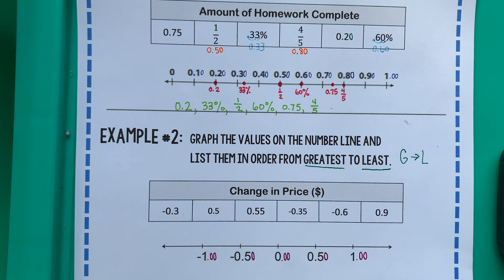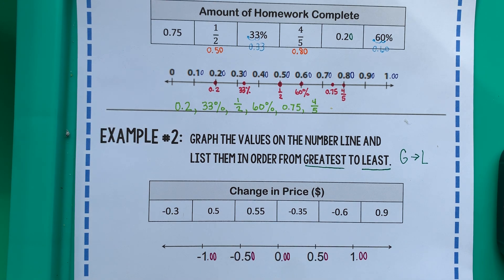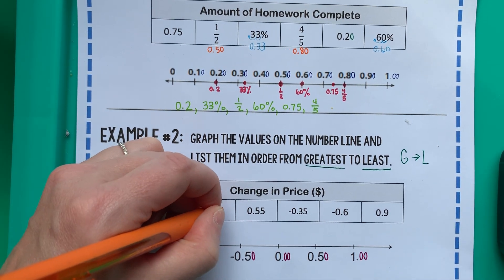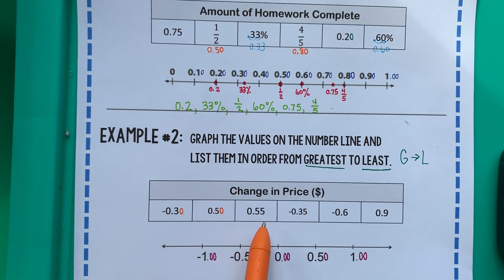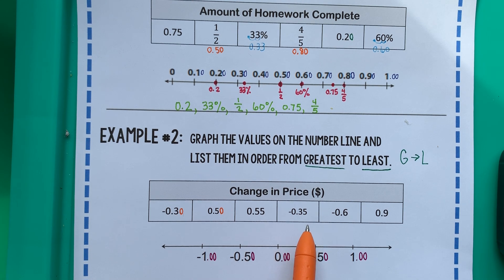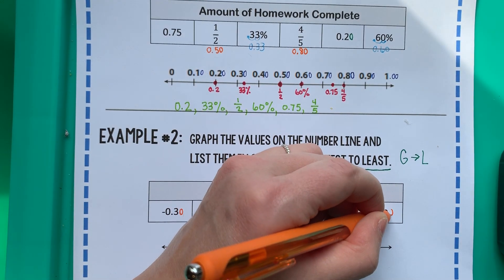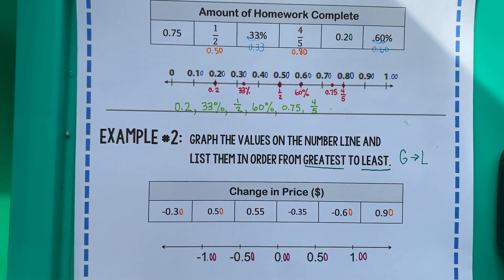Now that we've made the number line look like money, let's make the numbers in our box look like money. It says 'change in price' — so if it's negative, the price went down; if it's positive, the price went up. Adding a zero gives us negative 30 cents, positive 50 cents. This one already looks like positive 55 cents; this one already looks like negative 35 cents. Adding a zero here gives negative 60 cents, and adding a zero here gives positive 90 cents. Now that they all look like money, we just have to figure out where they go.